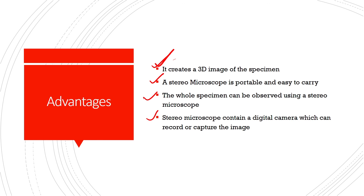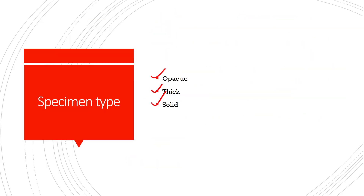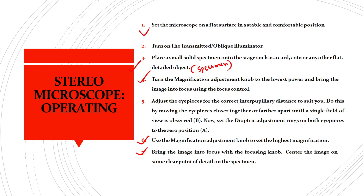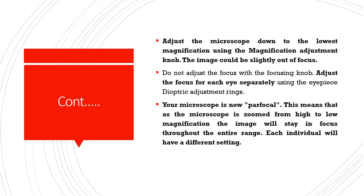The disadvantages of a stereo microscope are that it is expensive and has only low magnification power, up to 80x. Despite these drawbacks, this session covered the definition, parts, magnification, operating procedure, types, and advantages and disadvantages of the stereo microscope.